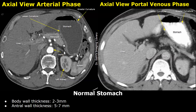This makes it easier to distinguish between different structures. You can see the normal rugal folds more clearly in this image. The wall thickness at the upper and middle parts of the stomach, such as the fundus and body, is between two and three millimeters. It is greater at the lower parts of the stomach, such as the antrum and pylorus.